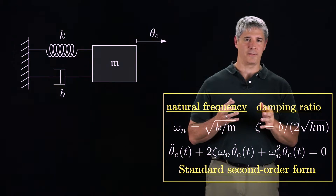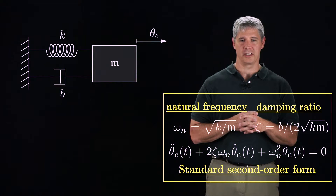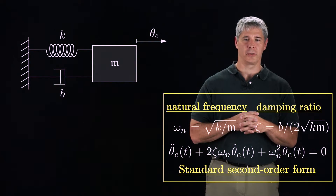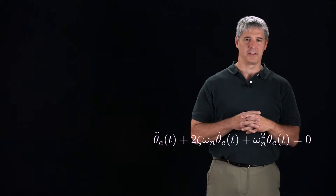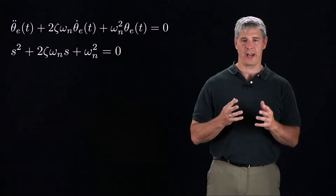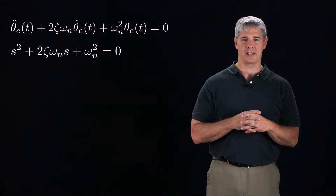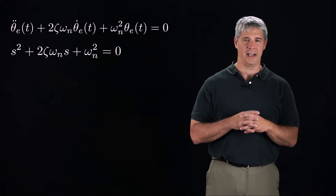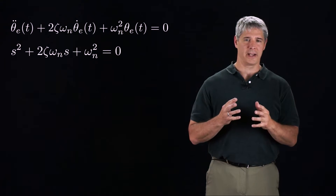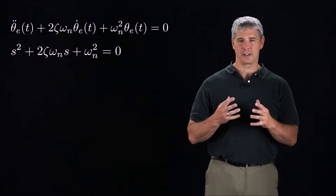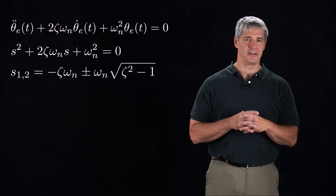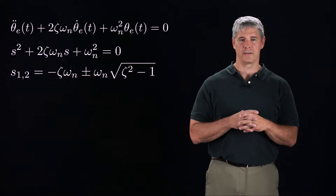This is the standard form for a stable second-order homogeneous linear differential equation. The characteristic equation of this differential equation is the quadratic equation s squared plus 2 zeta omega n s plus omega n squared equals 0. The roots of this quadratic equation are minus zeta omega n plus or minus omega n times the square root of zeta squared minus 1.